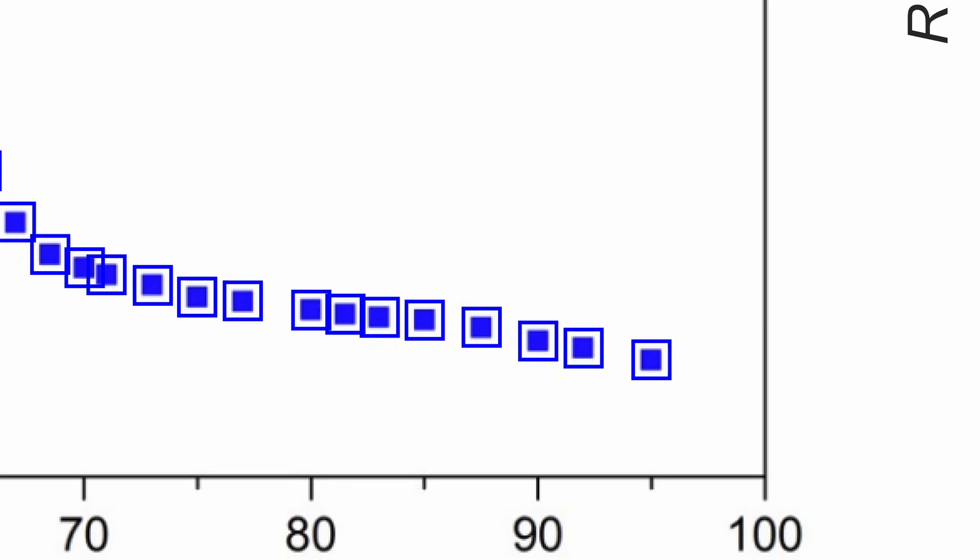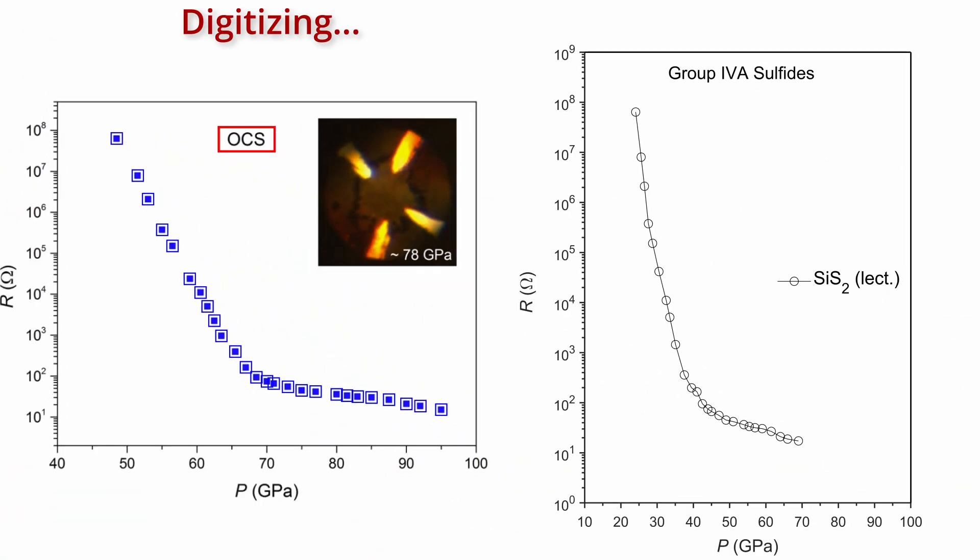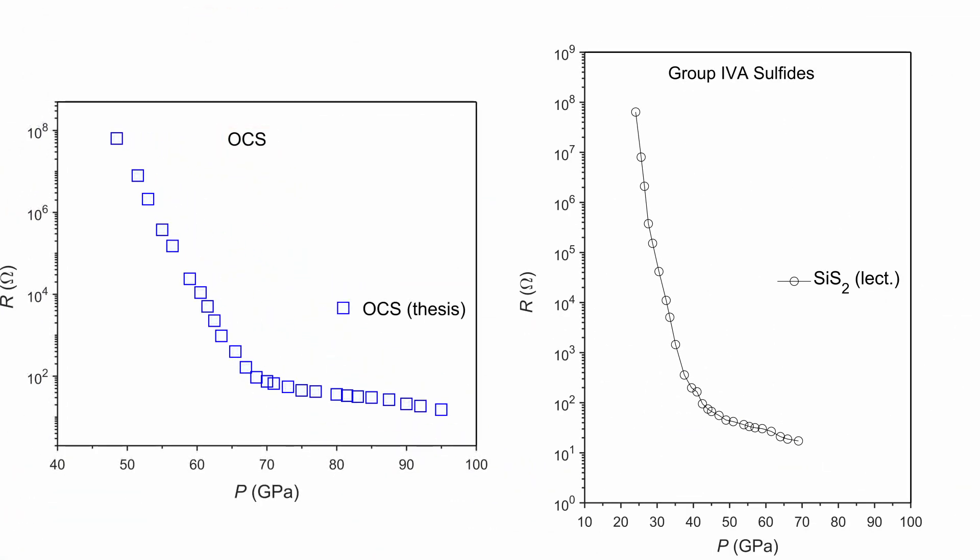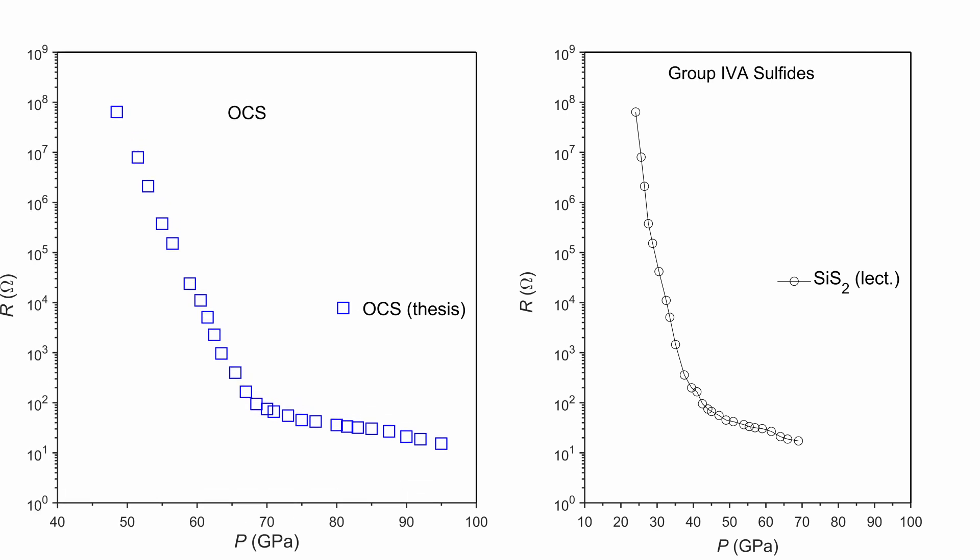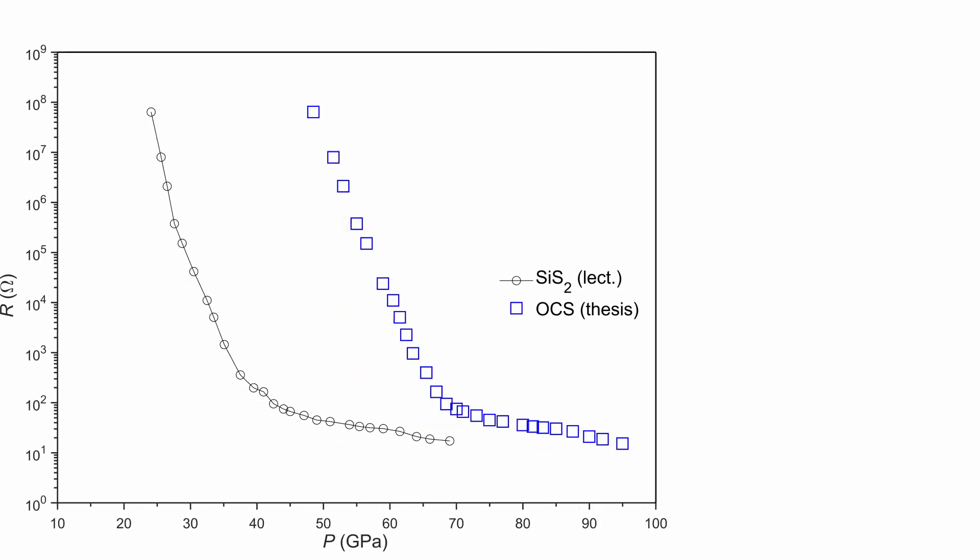But if you replace one oxygen with sulfur, how is that going to affect this insulator-metal transition under pressure? So CO2 is not a metal up to 250 GPa. CS2 is a metal at 50 GPa, but if you remove one oxygen and add sulfur, it becomes metal around 110 GPa.